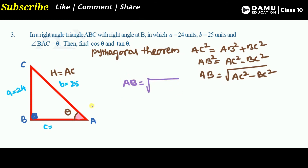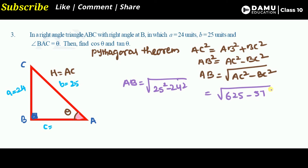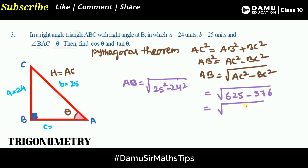Substituting the values: AB = √(25² − 24²) = √(625 − 576) = √49 = 7. So AB equals 7 units.